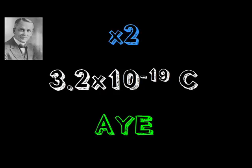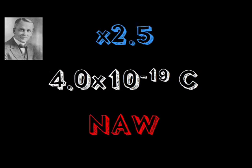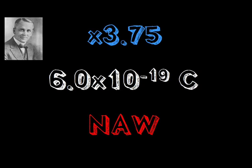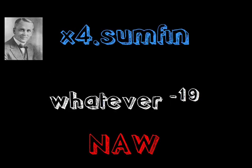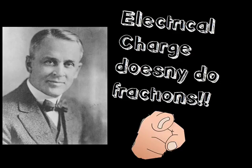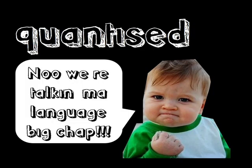So Rob Millikan ended up with some amazing conclusion which was electrical charge only comes in specific whole number multiples of the charge of one electron, which is 1.6 times 10 to the power of minus 19 coulombs. You can have two loads of these, three loads, four, five, six, and so on. But you can't have two and a half or three and three quarters times the charge. The electrical charge doesn't do fractions. This means the electrical charge is quantized, which means it comes in well-defined wee bits. Sorted!